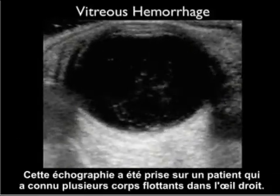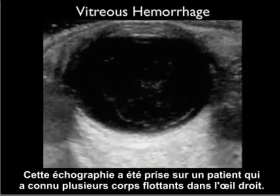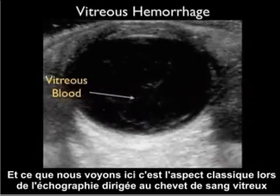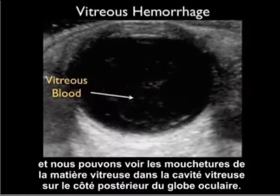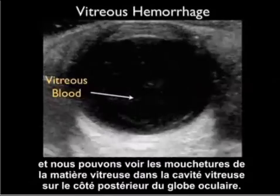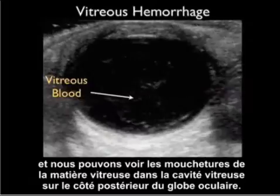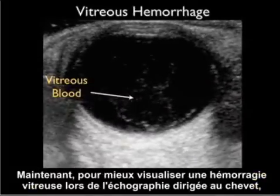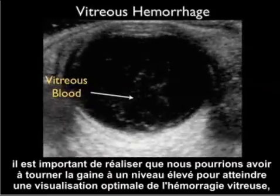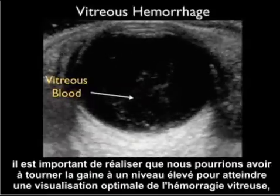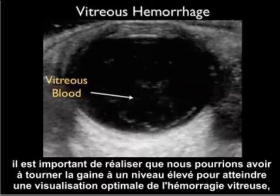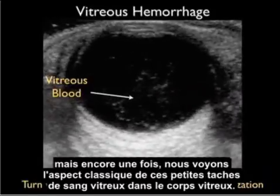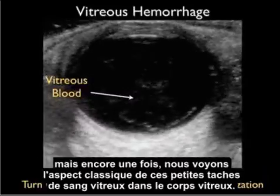This ultrasound was taken from a patient who experienced multiple floaters in their right eye, showing the classic appearance of vitreous blood on bedside ultrasound — speckles of vitreous material within the vitreous cavity in the posterior aspect of the eyeball. To best visualize vitreous hemorrhage on bedside ultrasound, it's important to turn the gain up to a high level for optimal visualization, but again we see those characteristic little speckles of vitreous blood within the vitreous body.